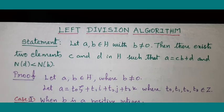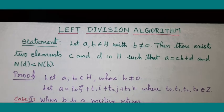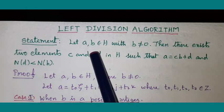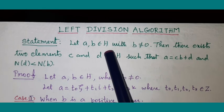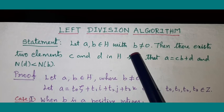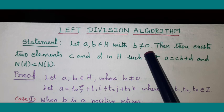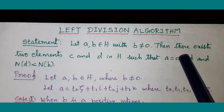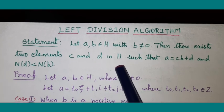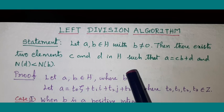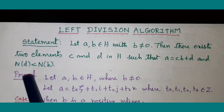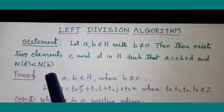Left division algorithm — first look at the statement. If A and B are two elements of the Hurwitz Ring of Quaternions H, with B not equal to 0, then this theorem says that we can find two elements C and D in H such that A is equal to CB plus D, and the norm of D is less than the norm of B.